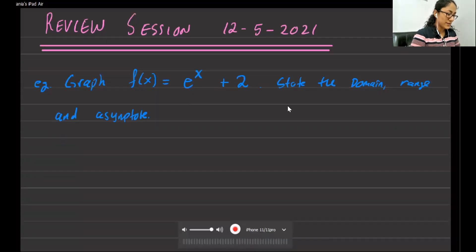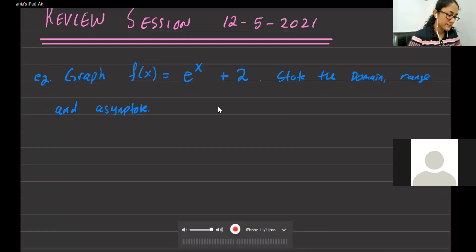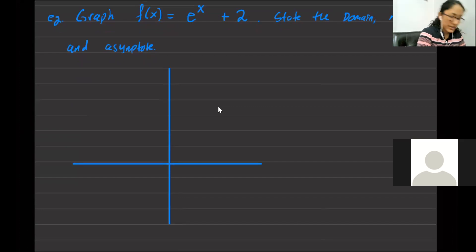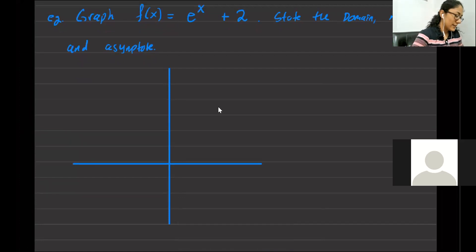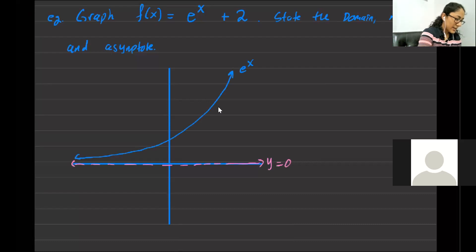Do you remember how the graph of this function looks, the basic graph? It's like an upward curve — so it's always increasing. E is about 2.7, so the base is greater than 1. Let's just say that is e to the x. We know this function has a horizontal asymptote at y equals 0, and the point it passes through is (0, 1).